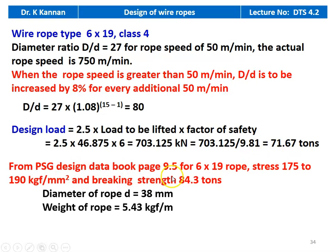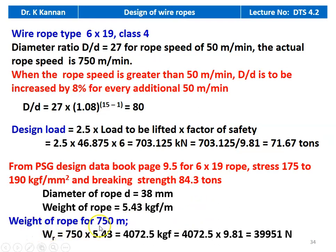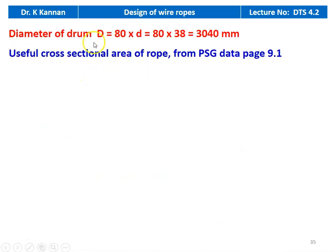From the PSG design data book page number 9.5 for 6 by 19 rope, the stress value is 175 to 190 kilogram force per millimeter squared. We take the breaking strength of 84.3 tons, which is higher than the required 71.67 tons. Diameter of the rope equals 38 millimeter, weight of the rope equals 5.43 kilogram force per meter. For the full depth of 750 meters, weight of rope equals 750 into 5.43 equal to 4072.5 kilogram force, which is 4072.5 into 9.81 equal to 39,951 newton. Diameter of the drum equals 80 into 38 equal to 3040 millimeter.